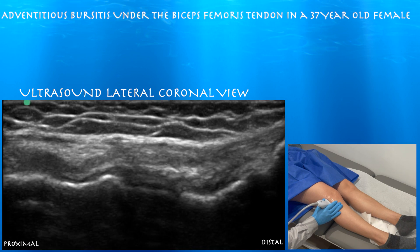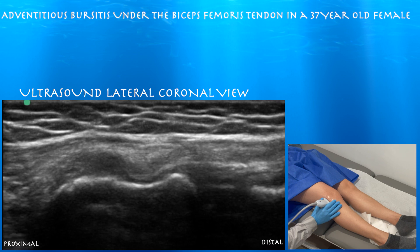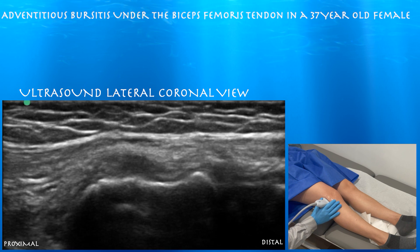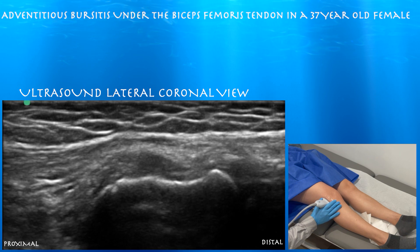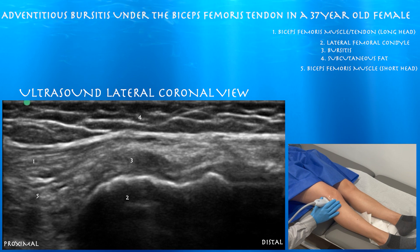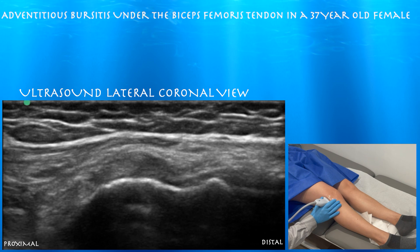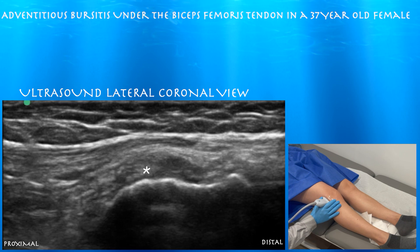Here you can see a hypoechoic signal with some mixed echogenicity, and this is where she's tender. I believe this is an adventitious bursitis under the biceps femoris tendon slash muscle junction. I'm not aware of a bursa that would normally live in this location, and that's why I'm calling this an adventitious bursitis.